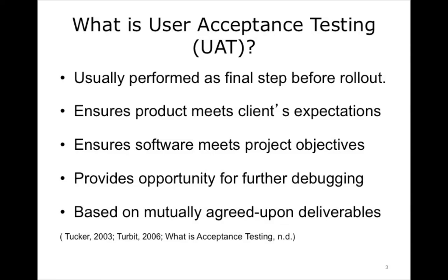User acceptance testing is performed by the end user or users prior to the rollout of a finished software product. It gives both the end users and the software manufacturer one last chance to be sure that the product being delivered fully meets their expectations, project objectives, and is free of any defects or bugs. UAT also provides another opportunity for further debugging, since the end user often uses the product from a perspective different from that of the manufacturer.